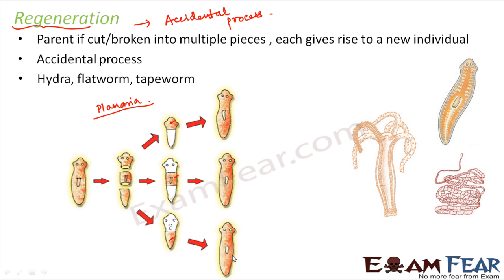This is one very big difference of regeneration from other modes of reproduction — in other modes organisms reproduce on their own will, but here the organisms reproduce accidentally.